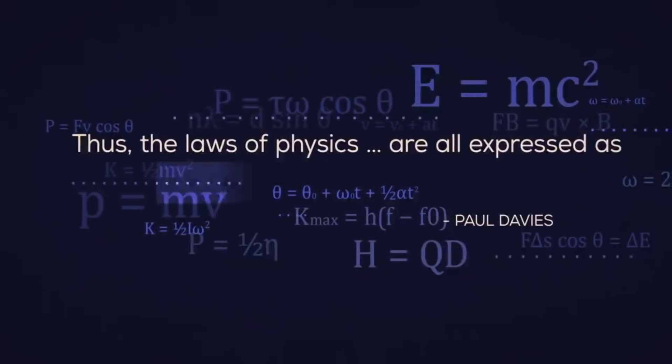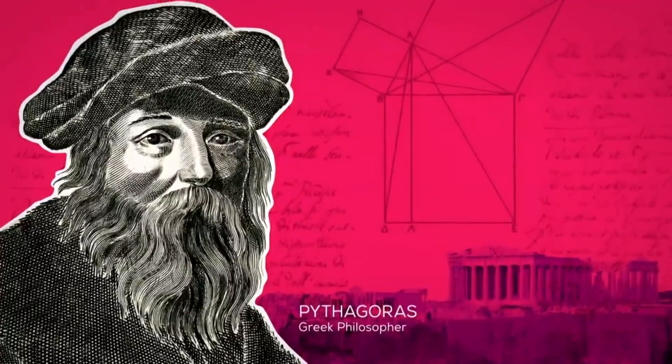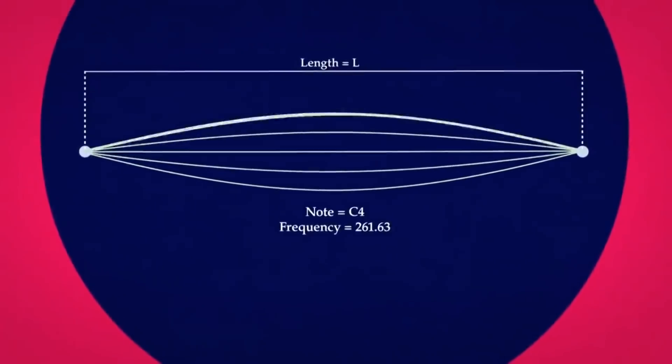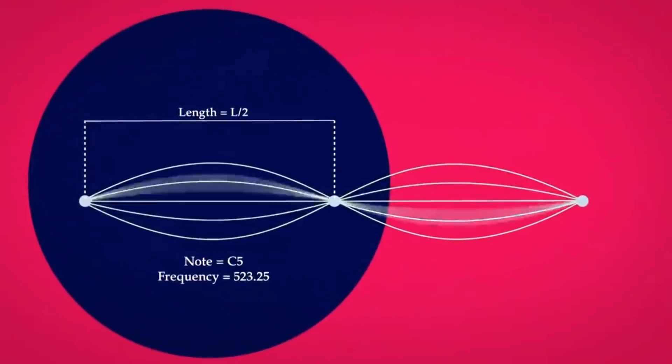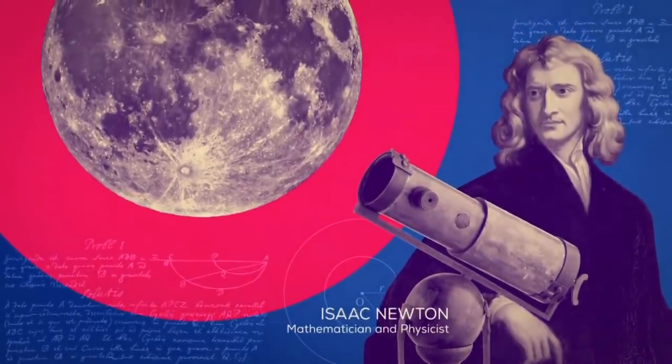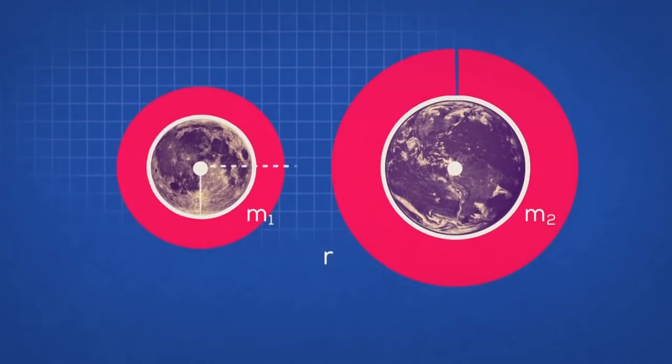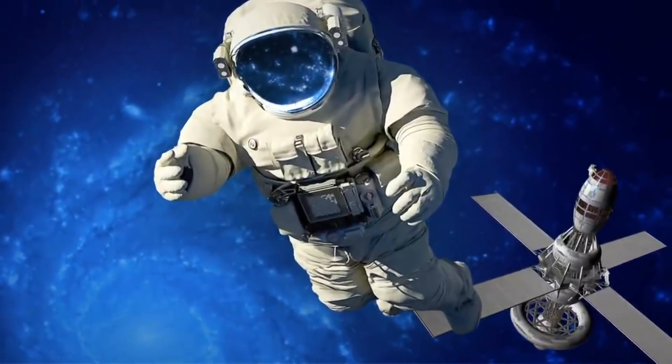Thus, the laws of physics are all expressed as mathematical equations. For example, Pythagoras discovered that when a vibrating string is shortened by half, it plays the same note one octave higher. Isaac Newton's observations led to his discovery of the law of gravity – a mathematical relationship expressed as a simple equation that enabled us to enter the space age.